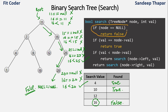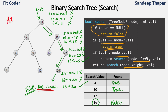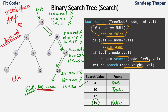Looking at the pseudocode: if the node is null, we have traversed the tree and the node is not found, so return false. If the node value equals the search value, return true. Otherwise, if the value is less than the node go to the left subtree; if greater go to the right subtree. At each step we potentially reduce our search space in half. Time complexity is O(h); worst case is O(n) for a skewed tree.